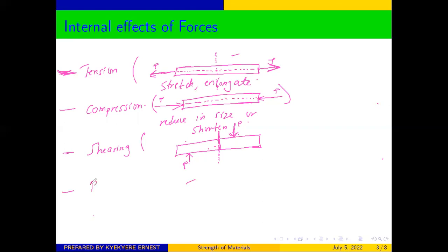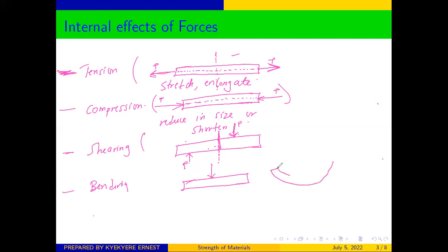The fourth effect we can talk about is bending. When a force is applied on a body which causes the object to bend — for example, applying a force at the middle of the same member — this results in bending of the member. The force is going to cause the member to deform by bending.